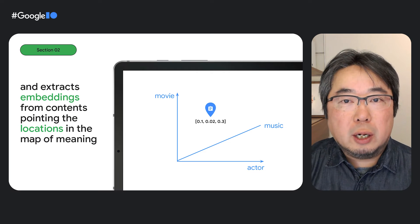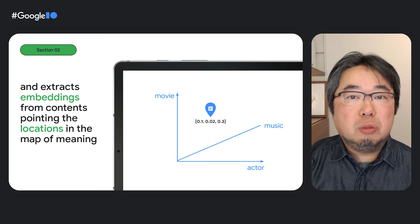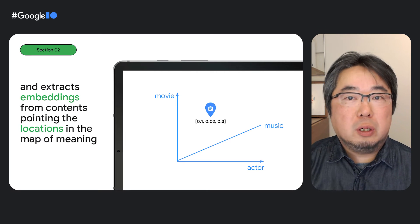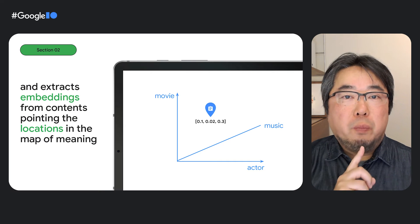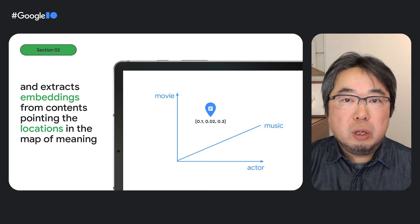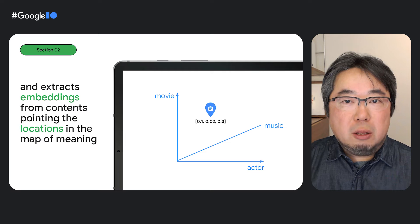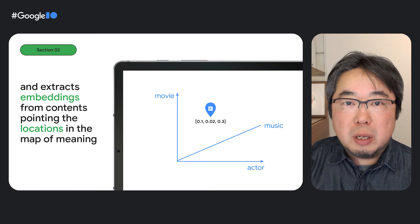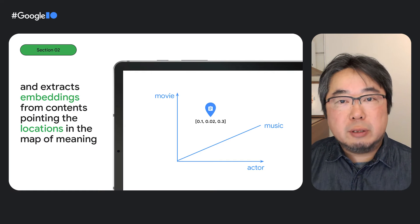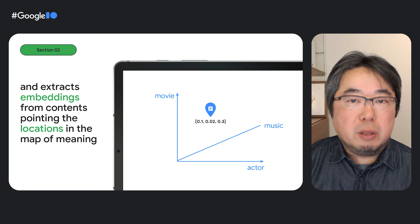Let's take an example where a text discusses movies, music, and actors with a distribution of 10%, 2%, and 30%, respectively. In this case, the AI can create an embedding with the three values, 0.1, 0.02, and 0.3, in three-dimensional space. Please note that this is a simplified example. In reality, embedding space may have hundreds, or one thousand, or two thousand dimensions that can represent millions of different categories of content.